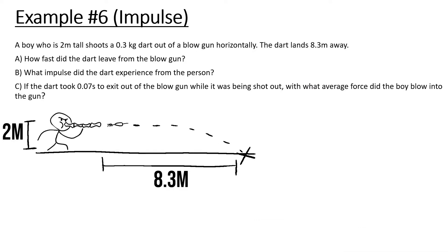A boy who is 2 meters tall shoots a 0.3 kg dart out of a blowgun horizontally. The dart lands 8.3 meters away. How fast did the dart leave the blowgun? What impulse did the dart experience if the dart took 0.07 seconds to exit the blowgun? With what average force did the boy blow into the dart? So the dart is shot out horizontally and falls down 2 meters over here.